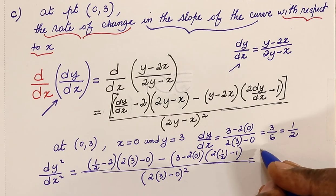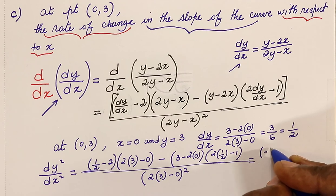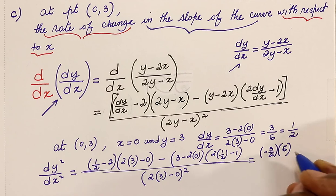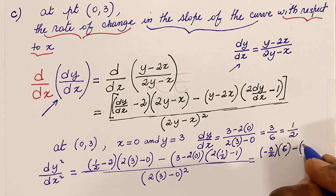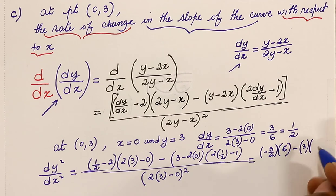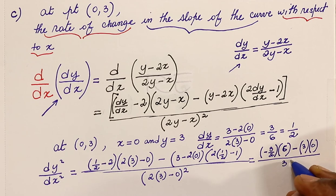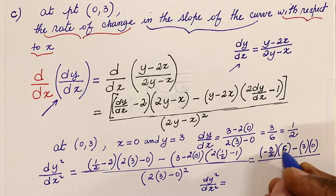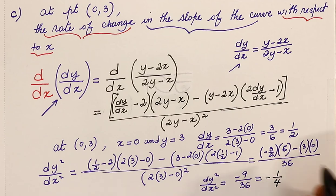Cleaning up: one half minus 2 is negative 3 halves. 2 times 3 is 6, minus 0 is 6. Then 3 times (2 times one half is 1, minus 1) is 0. Divided by 6 squared which is 36. The second derivative is negative 3 halves times 6 over 36, which is negative 9 over 36, giving negative one-fourth. That's it.